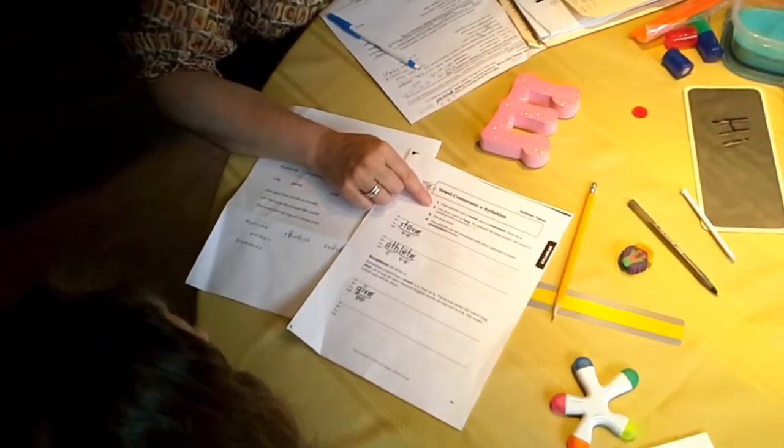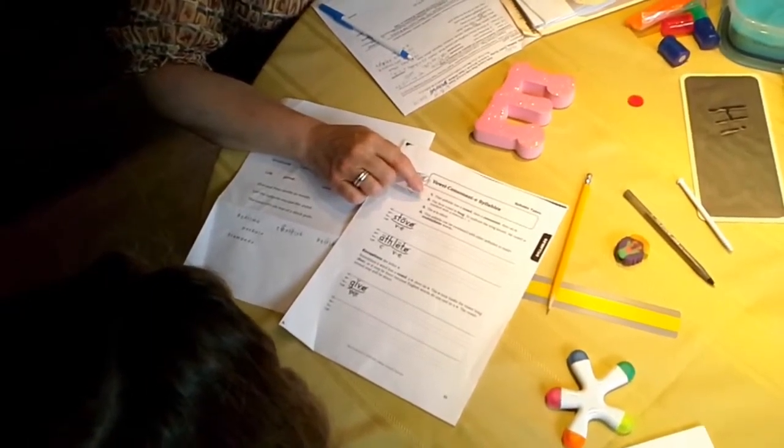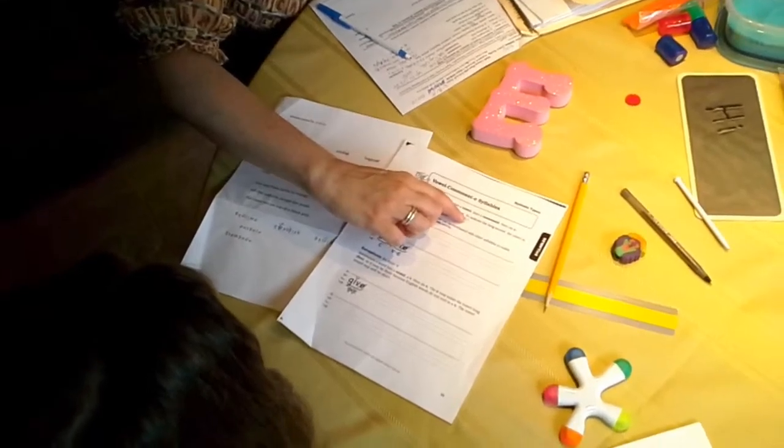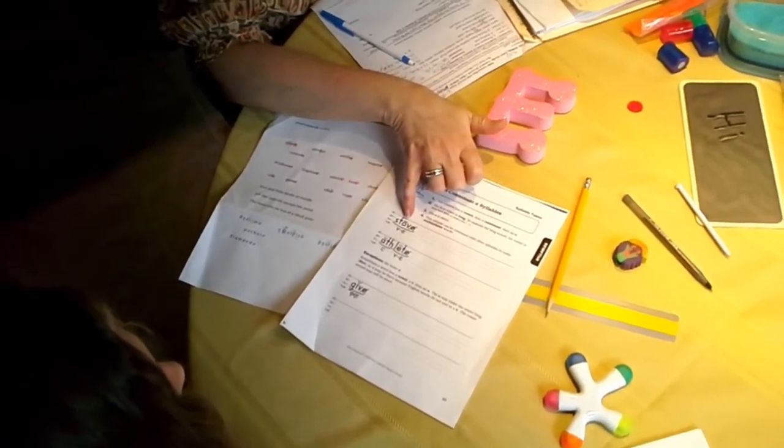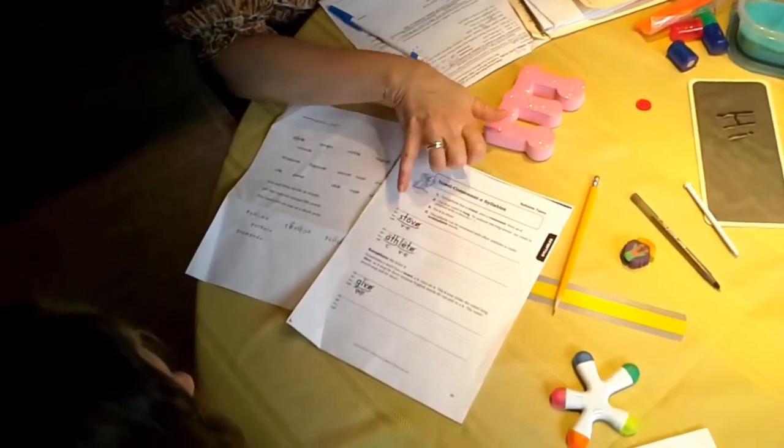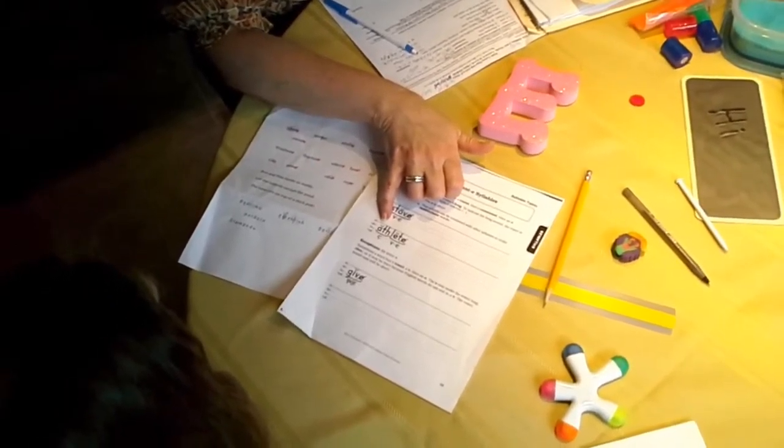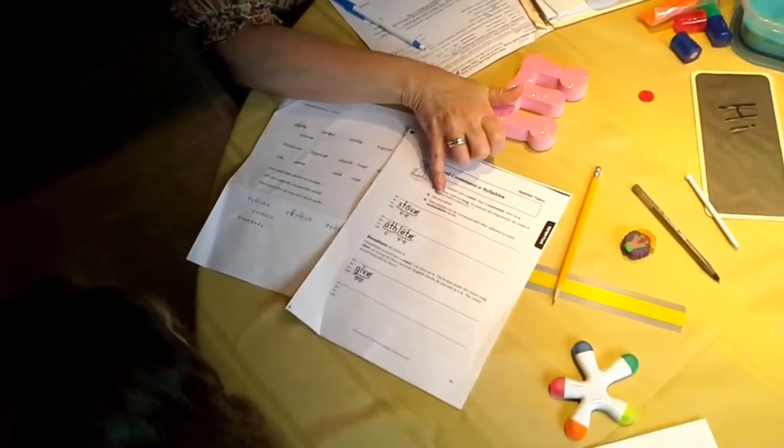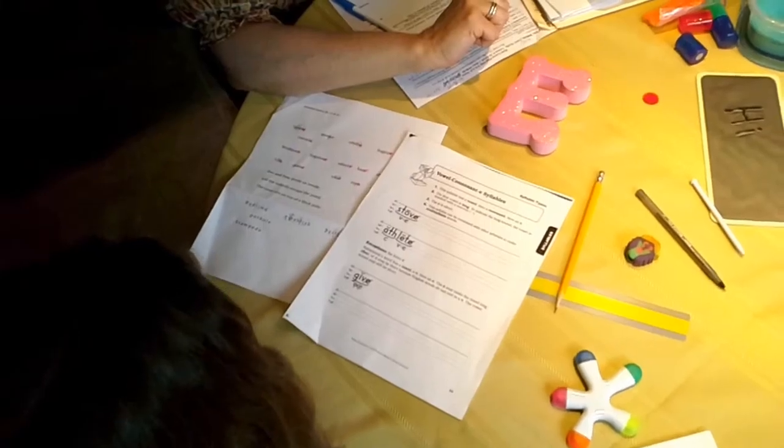Second thing is, the first vowel is going to be long. To show that it's a long vowel sound, we're going to put a straight line across the top. See that little straight line right there? That's called a macron. The macron symbol means that that's going to be a long vowel sound. That is a breve that shows that it's going to be a short vowel sound. And then the third thing is, the e on the end is silent.